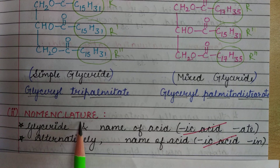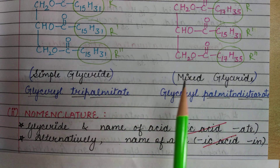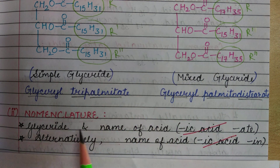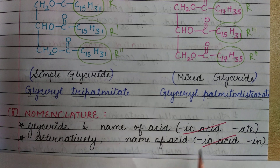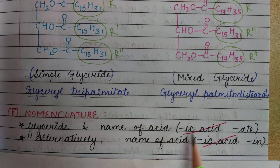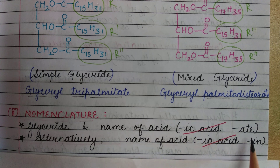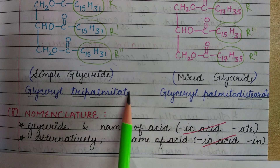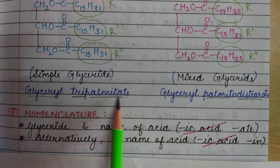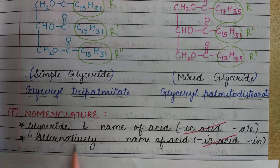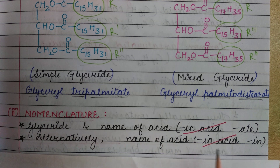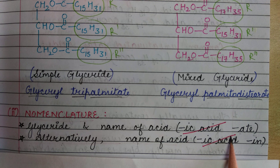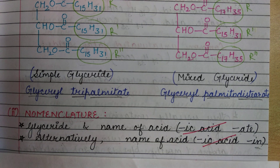For nomenclature, we first write 'glyceryl' and then the name of the acid. However, instead of writing '-ic acid', we write '-ate' — for example, palmitate or stearate. Alternatively, we can use the name of the acid but replace '-ic acid' with '-in'. These are two valid ways of naming the compound.